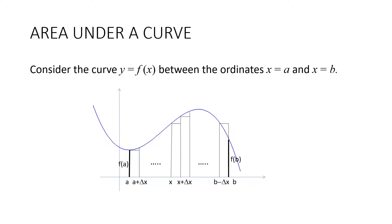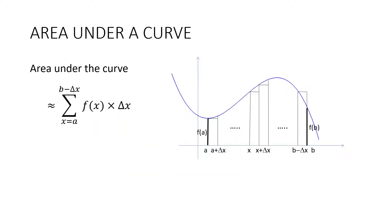Let's begin with the fundamental theorem of calculus. Consider the curve y equals f of x between the ordinates x equals a and x equals b. I've divided up this interval into little rectangles, each with a width of delta x — delta meaning a small change in x — and a height of f of x. The area under the curve is approximately equal to the sum of all those rectangles: the sum from x equals a up to b minus delta x of f of x times delta x, because that's the formula for the area of a rectangle.